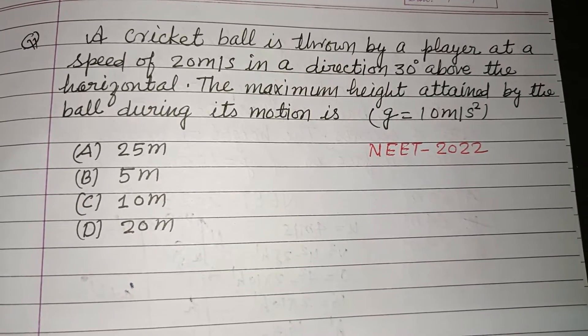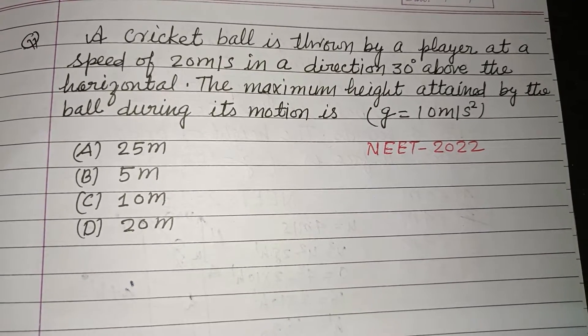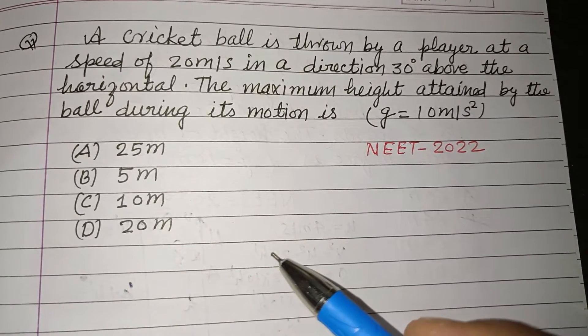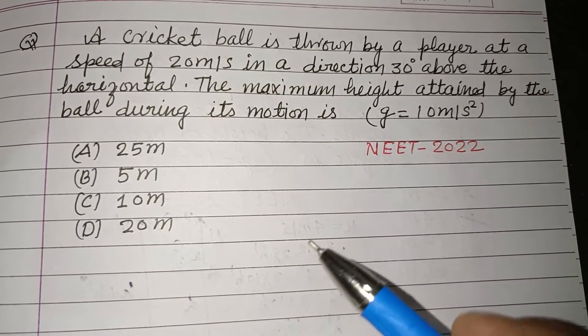Hello viewers, warm welcome to this YouTube channel. This is a question from NEET 2022. A cricket ball is thrown by a player at a speed of 20 meter per second at a direction of 30 degrees.